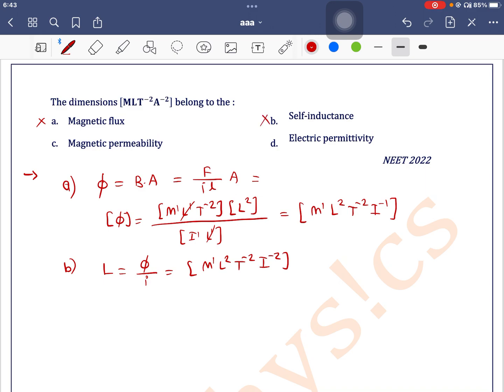We will see for third, that is magnetic permeability. We know that formula for self-inductance is μ₀ number of turns squared area divided by length. So from this I can use μ₀L is equal to L into L divided by N² area.